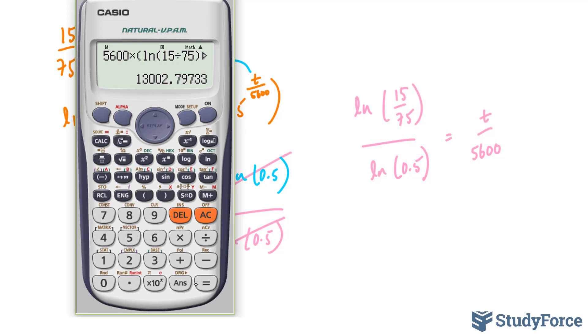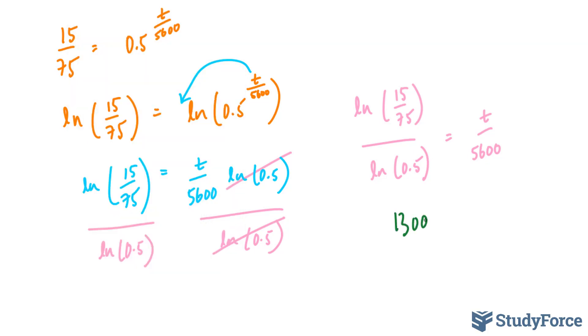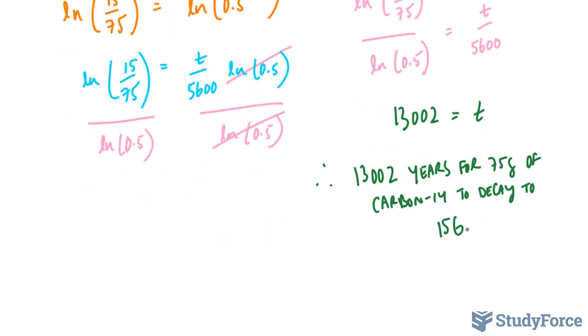And you end up with 13,002. 13,002 is equal to T. So to conclude, therefore it takes 13,002 years for 75 grams of carbon-14 to decay to 15 grams.